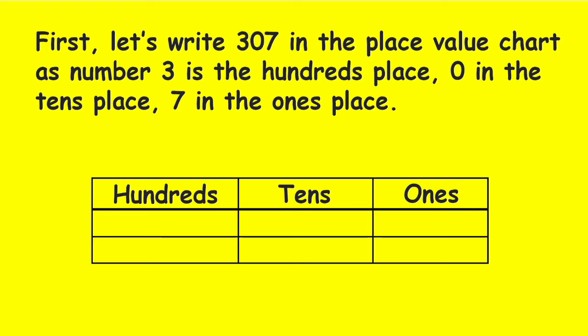Another example, we have 307 in standard form. So, first, let's write 307 in the place value chart as number 3 is in the hundreds place, 0 in the tens place, and 7 in the ones place.